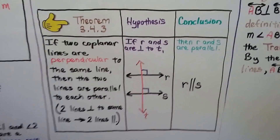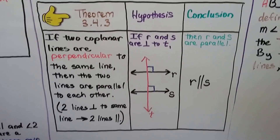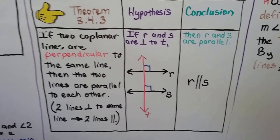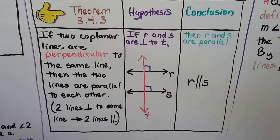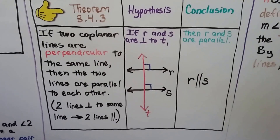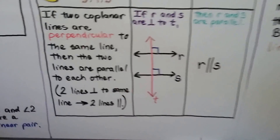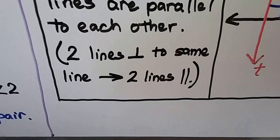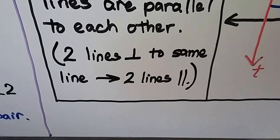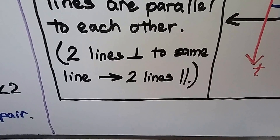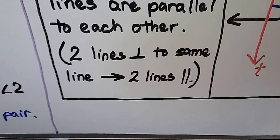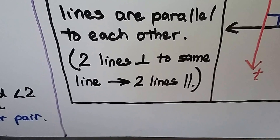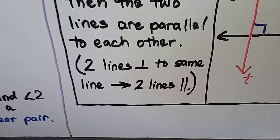Here's our third theorem, 3.4.3. It says if two coplanar lines are perpendicular to the same line, then the two lines are parallel to each other. We can write it as a reason in a proof as: two lines perpendicular — using the perpendicular sign — to the same line, arrow to the right meaning therefore, and then two lines and the parallel sign. Two lines perpendicular to the same line, therefore two lines parallel.